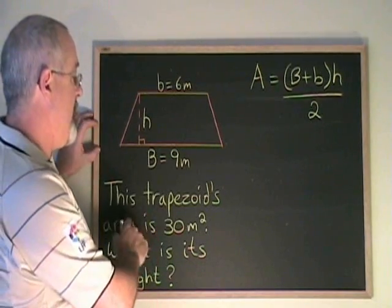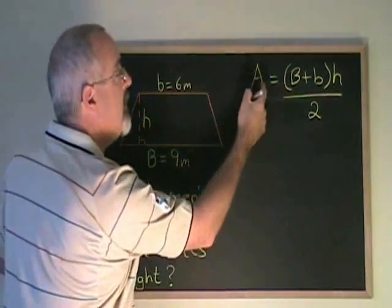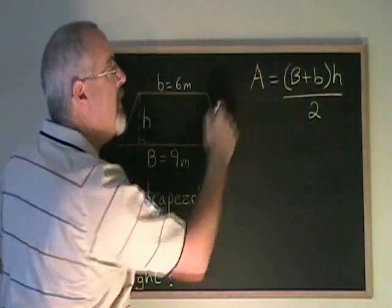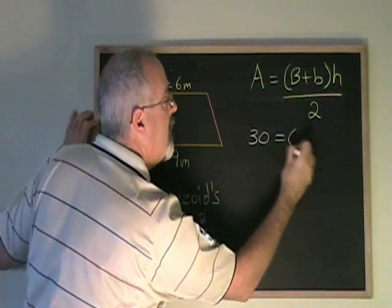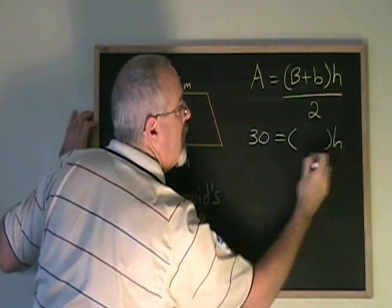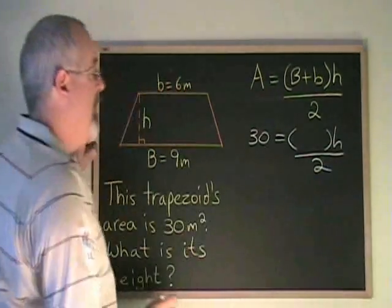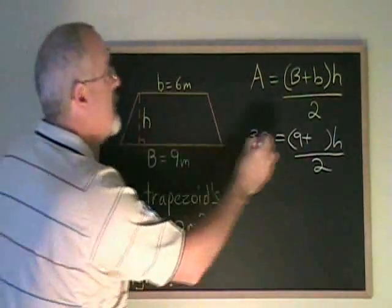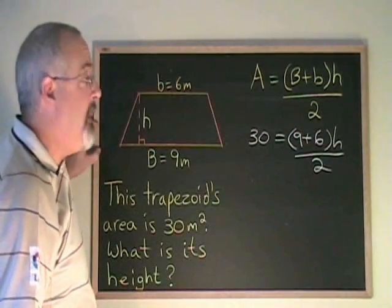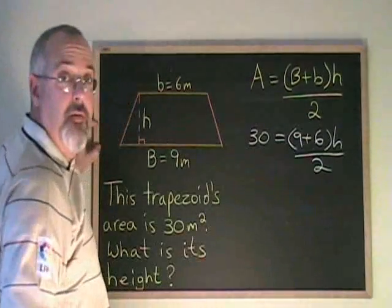In this case, we are given the area 30 meters squared. In the formula for area of a trapezoid, I replace my A with a 30. The big B is 9, and the little b is 6. The h has to remain an h for now, and the 2 is just part of the formula.